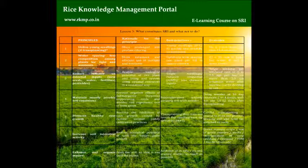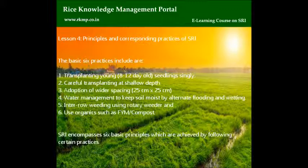Lesson 3: What constitutes SRI and what not to do. Lesson 4: Principles and Corresponding Practices of SRI. The basic 6 practices include: transplanting young, 8–12 day old single seedlings; careful transplanting at shallow depth; adoption of wider spacing of 25 cm x 25 cm; water management to keep soil moist by alternate flooding and wetting; inter-row weeding using a rotary weeder; and use of organics such as FYM compost.